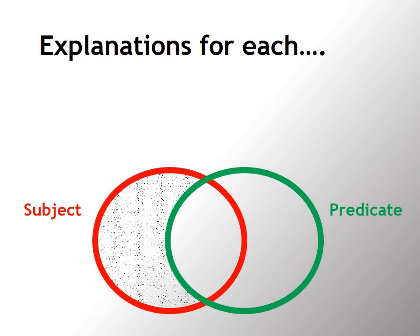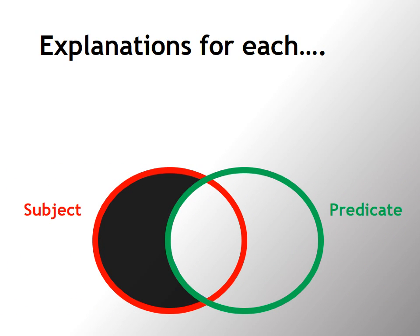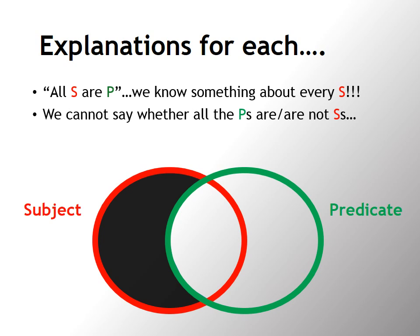So let's go over an explanation for each. Suppose you know that all S are P. Everything in the subject class is corralled, so to speak, by this blacking out into the predicate class. Well, if all S are P, we certainly do know something about every S. They're all P. However, we can't tell whether or not all the P's are or are not S's. I'll illustrate that.